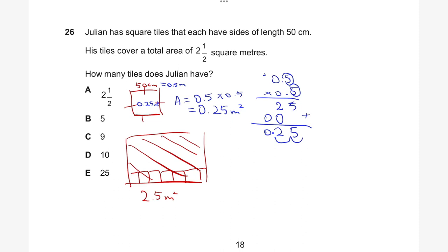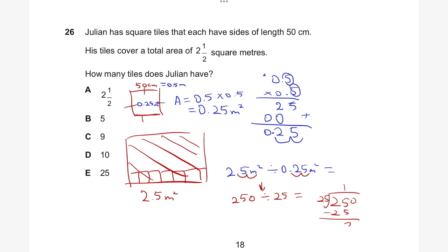We divide 2.5 by 0.25. To eliminate decimals, multiply both by 100: 250 divided by 25. 25 goes into 250 ten times, with no remainder. So 10 tiles fit within the total area of two and a half square meters. The answer to question 26 is D.